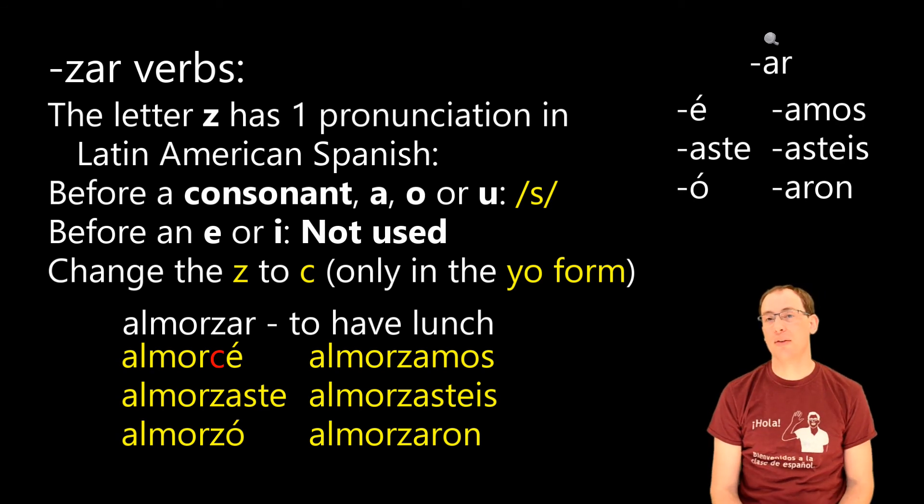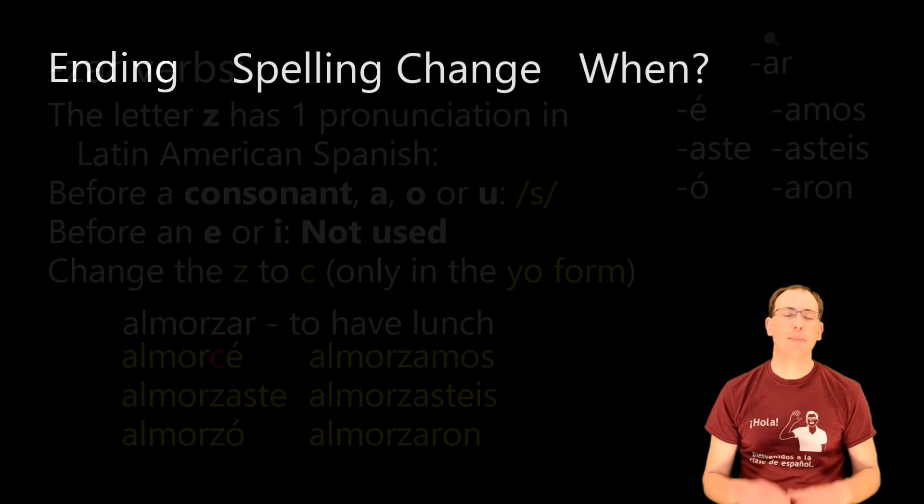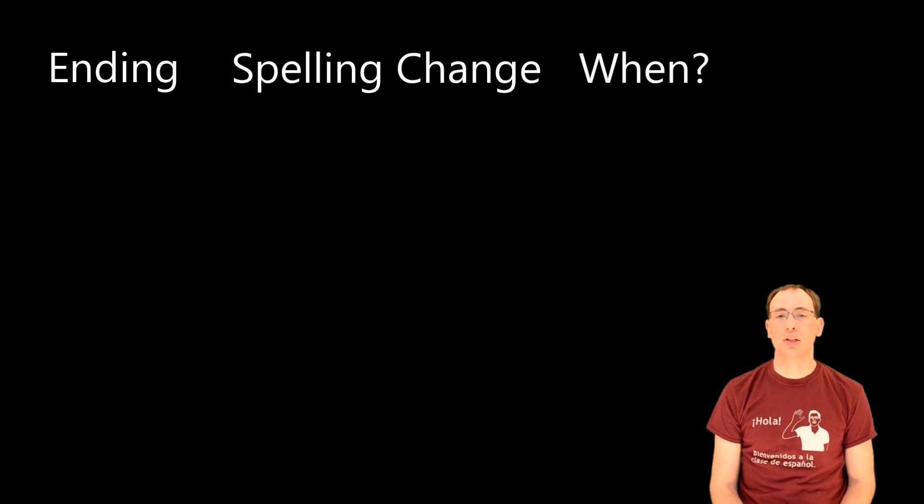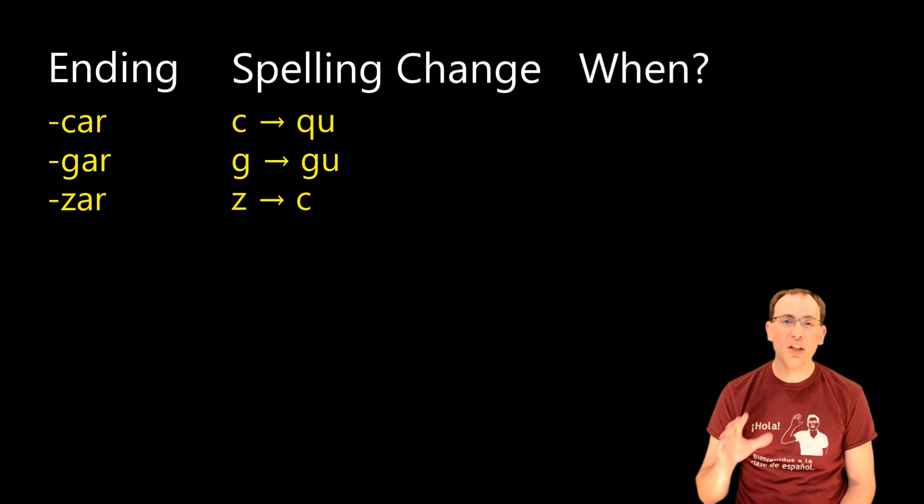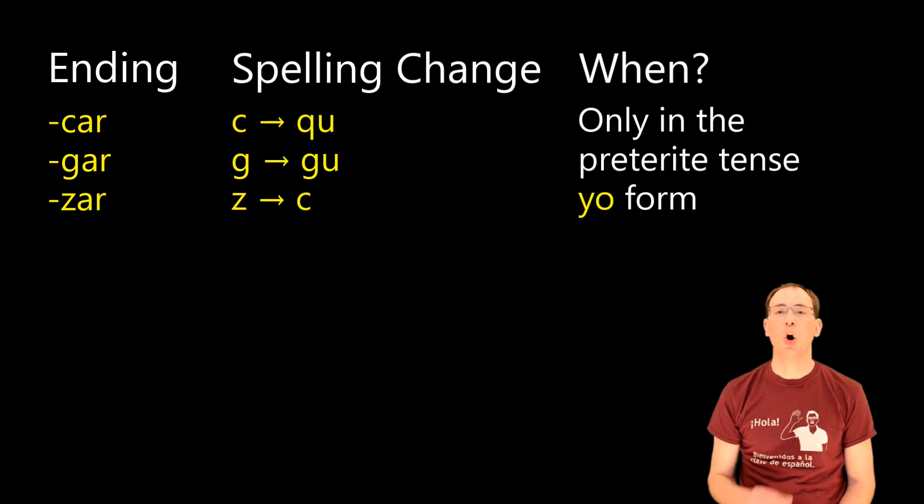So that's the theory on why we have to have these spelling changes. But as a recap, here's what you have to remember when conjugating car-gar-zar verbs in the preterite tense. For car verbs, change the c to qu. For gar verbs, change the g to gu. And for zar verbs, change the z to c. For all those verbs, you only make that change in the yo form, only when the next vowel is an e. You don't do it anywhere else, only in the yo form.